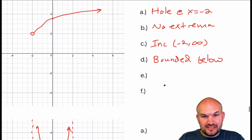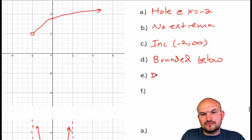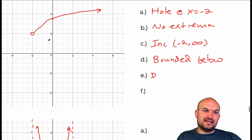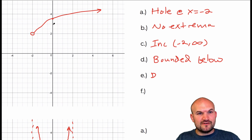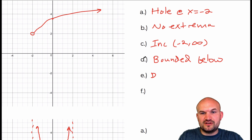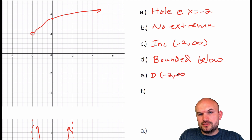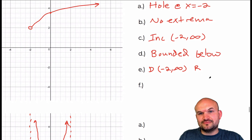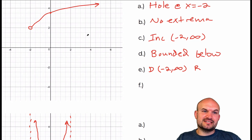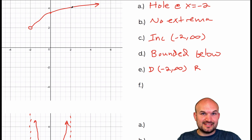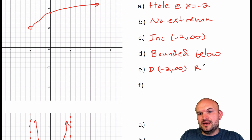Part E is domain and range. The domain: the farthest left this graph goes is negative 2, and the farthest right is infinity. Since x equals negative 2 is undefined, I need to use an open interval — so the domain is from negative 2 to infinity. For the range, the lowest this graph goes is positive 2 and the highest is infinity. Since 2 is undefined, I'll use an open interval: from 2 to infinity.